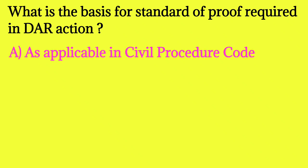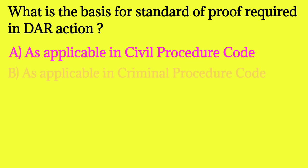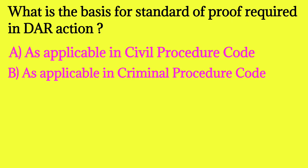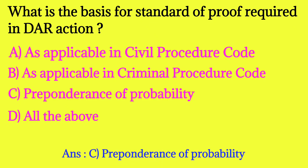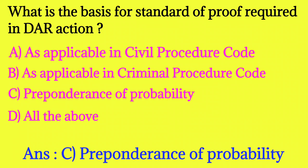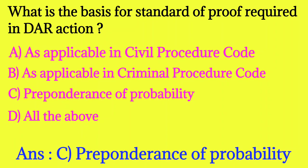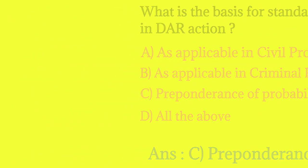What is the basis for the standard of proof required in DAR (Disciplinary Action Rules) proceedings? Options include: as applicable in Civil Procedure Code, as applicable in Criminal Procedure Code, preponderance of probability, and all of the above. Here, the answer is not 'all the above' — the correct answer is C: preponderance of probability.